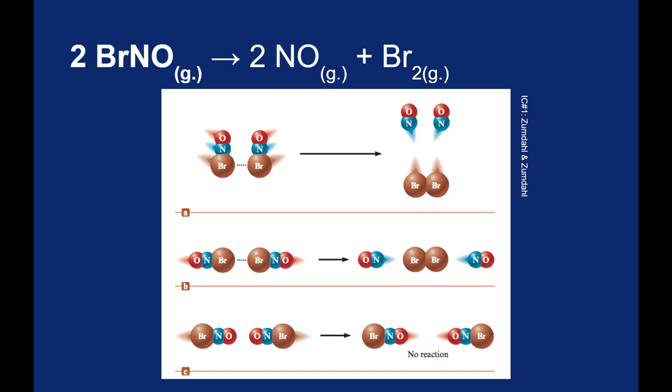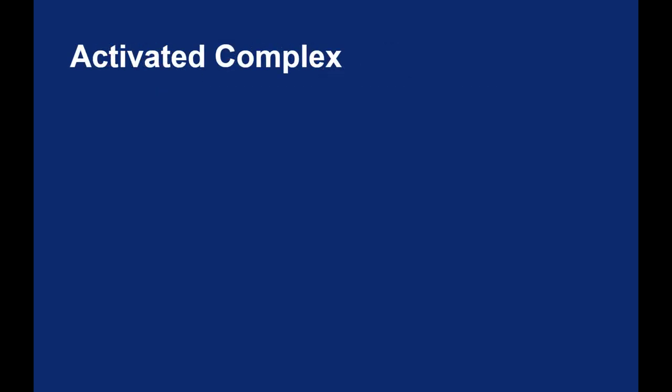However, as you see in the bottom, if the oxygen and oxygens come together, well then it's really difficult for the bromines to bond and actually form the products. So not only must your collisions have sufficient energy, the particles also have to collide in the correct orientation.